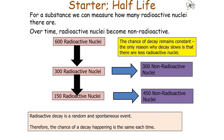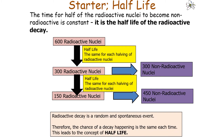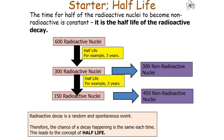The chance of a decay happening remains constant each time. The only reason radioactive decay slows down over time is that there are fewer radioactive nuclei left to become stable — which leads to the concept of half-life.